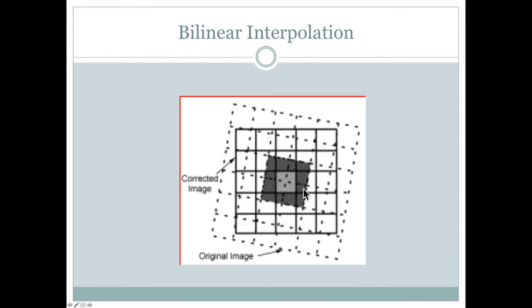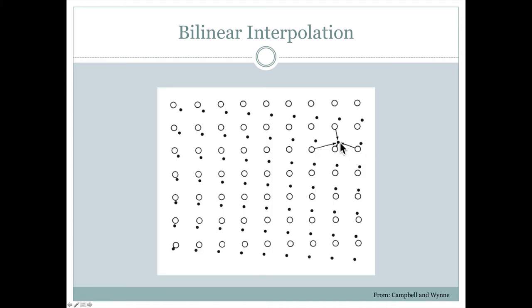There is another method called bilinear, where we don't just take the nearest pixel, but we take the four nearest pixels. And the values associated with the original image are averaged or in some other way assigned to this new pixel here. So all four of the gray pixel values are reassigned to this light gray pixel value in the corrected image. And we can see here, this is how it would work.